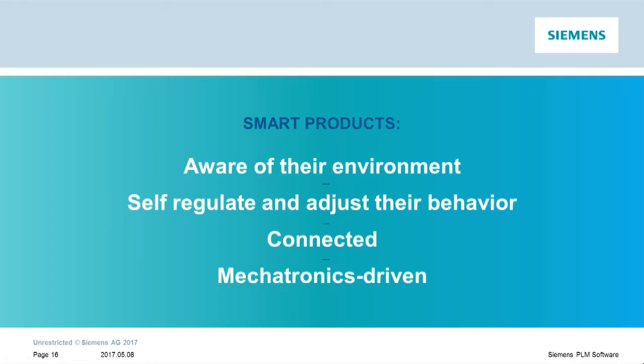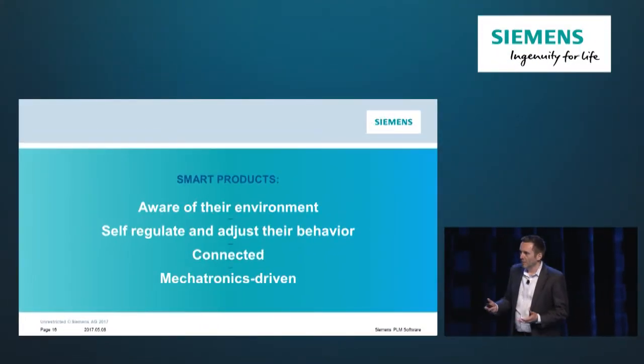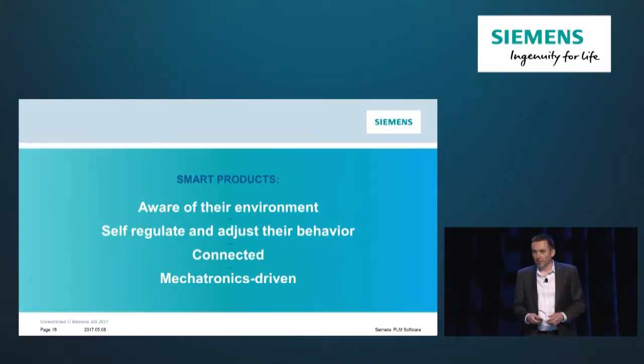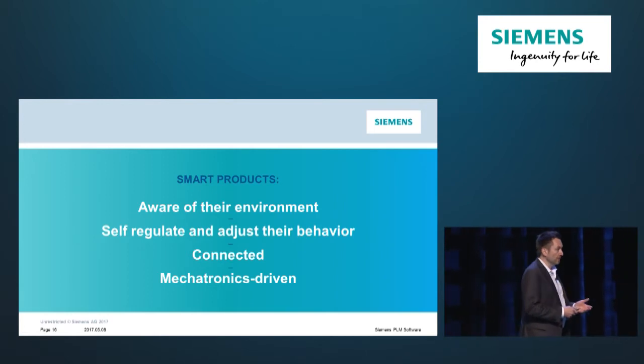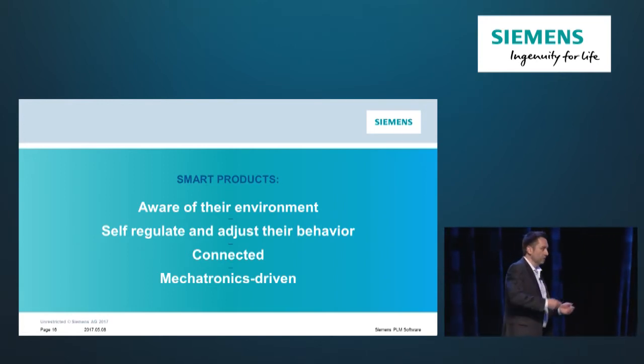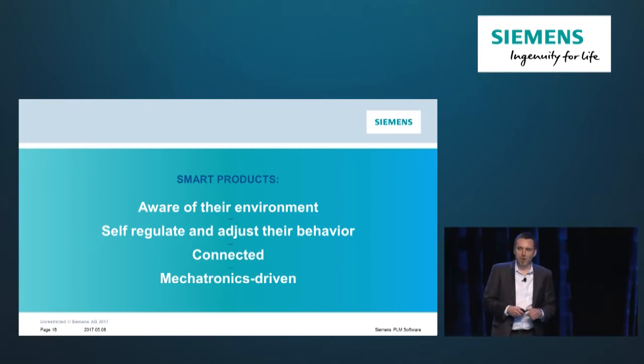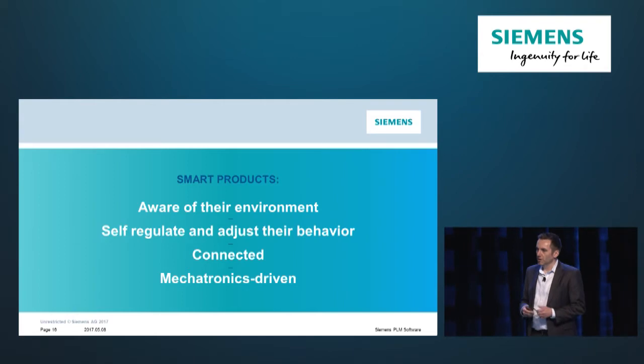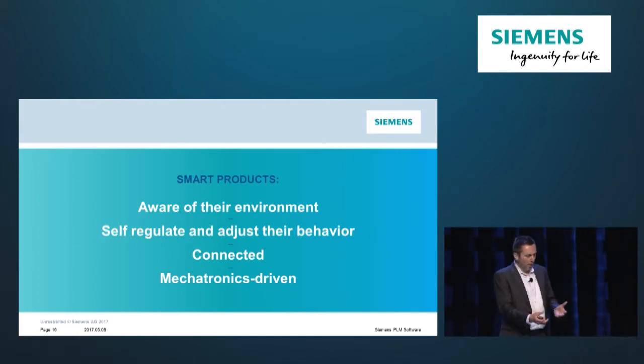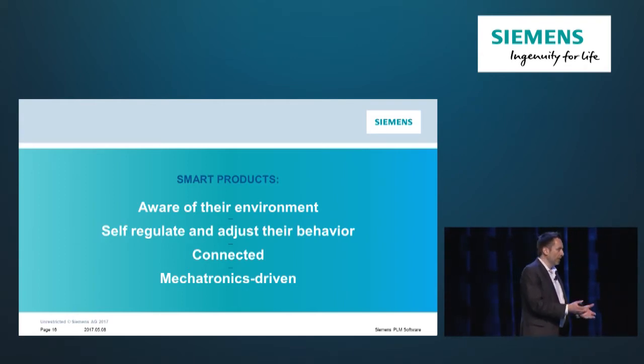What is a smart product? There are a lot of examples we see in the news every day that we interact with. Some of the obvious ones are autonomous vehicles. Drones that are going to deliver packages or pizzas. All the way to the washing machine that weighs the clothes and determines how much water and energy to use. These are all examples of smart products.